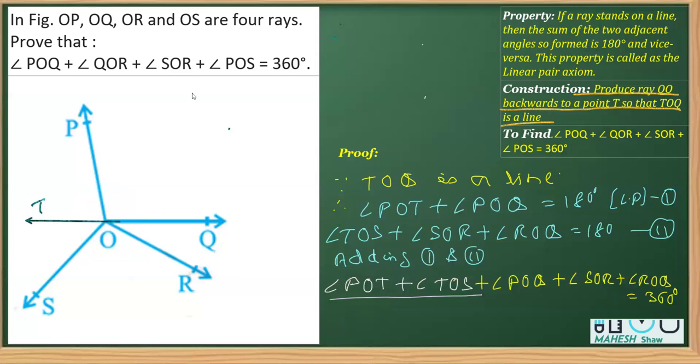So if I say that POT plus angle TOS can be written as POS, I'm going to replace this with angle POS. The sum of these two as POS plus the other angles that will be as it is: POQ plus angle SOR plus angle ROQ is equal to 360 degrees. This is what we had to prove in this question.